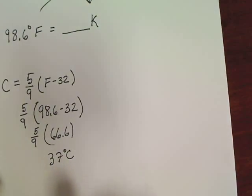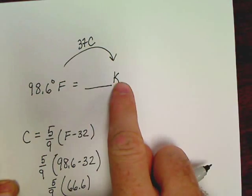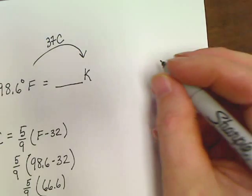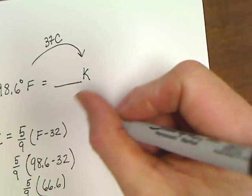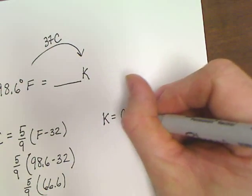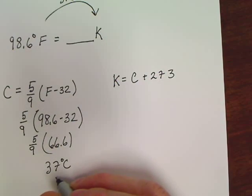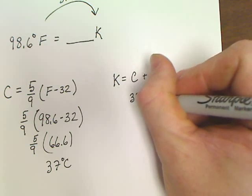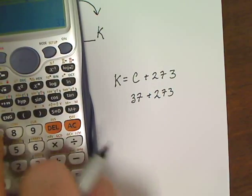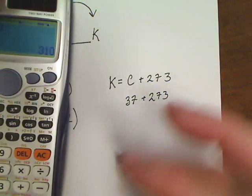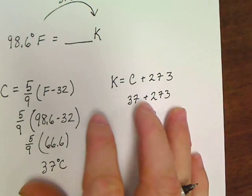So you have found Celsius is 37, but remember the whole purpose of this problem is asking you to find Kelvin. Well luckily we have a Kelvin equation: K = C + 273. So Kelvin is equal to C + 273. We've already got Celsius, it's 37, so all we've got to do is 37 + 273, and add those two together. 37 + 273 is 310.